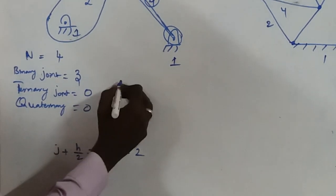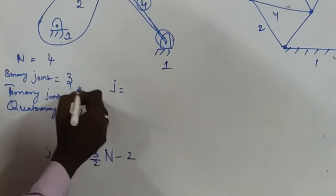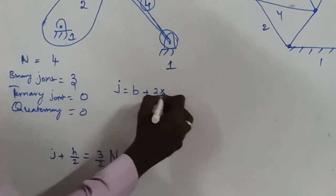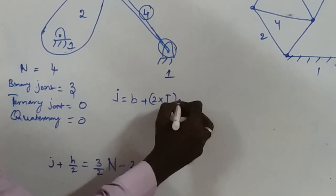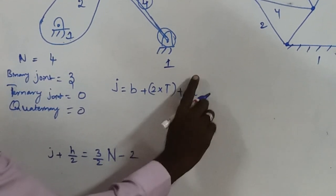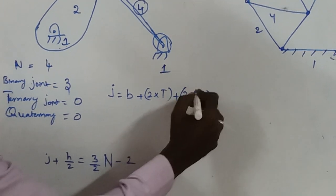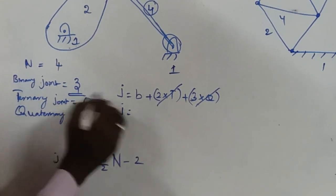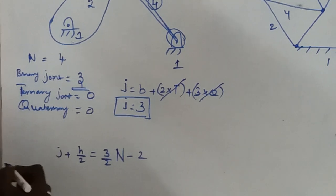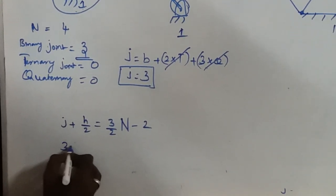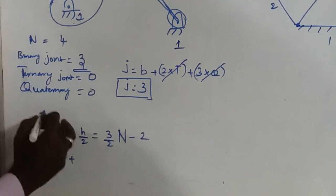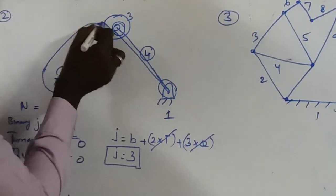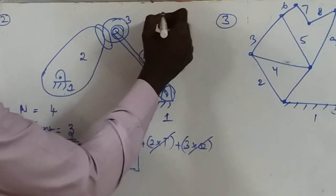Applying the Aw Cline formula: J equals binary joints plus 2 into ternary joints plus 3 into quaternary joints. Here there is no ternary and no quaternary, so J equals 3. For the higher pair H: the contact between links 3 and 2 is a point contact, so it is a higher pair. Therefore H is equal to 1.